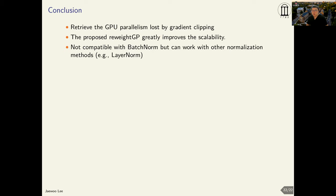In this work, we presented a scalable method to calculate the per-example gradient for differential privacy, and empirically showed that our proposed re-weighted GP method greatly improves the scalability of differentially private deep learning. There also exists a limitation: our proposed method is not compatible with batch normalization layers, so whenever a batch normalization layer is present, it must be replaced with another normalization method, for example layer normalization. Thank you for your attention, and feel free to ask any questions.